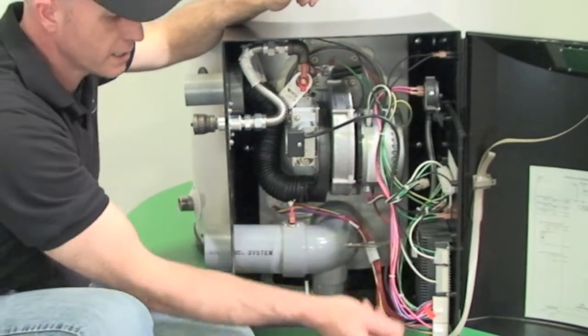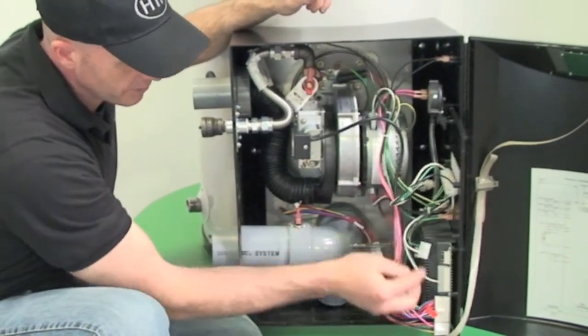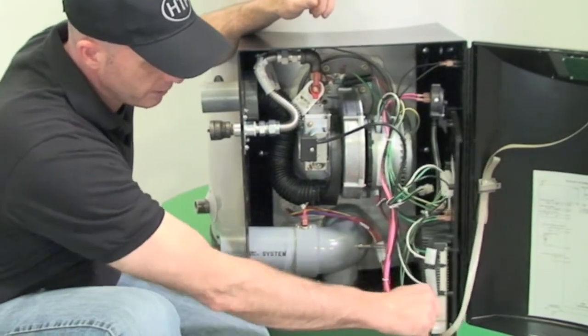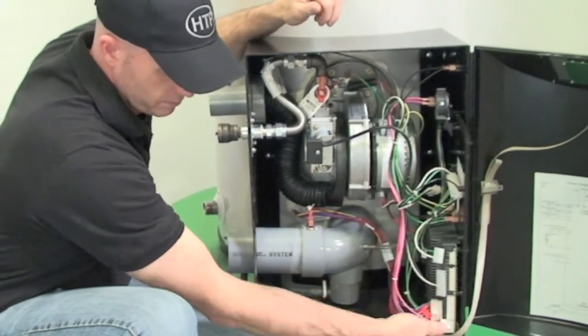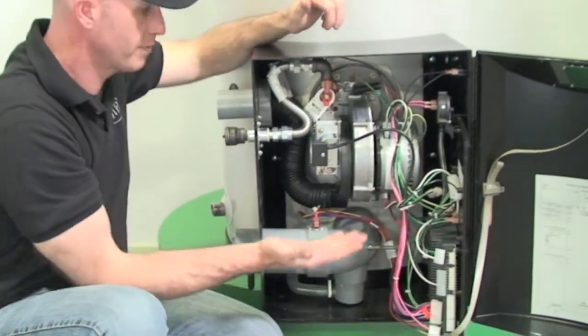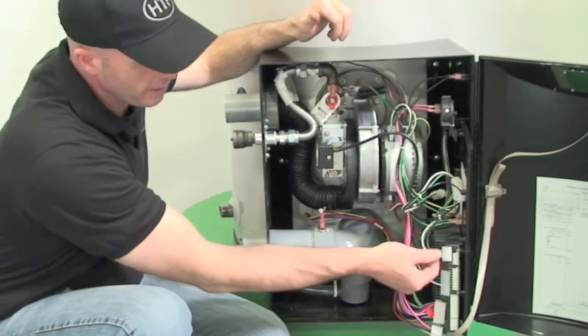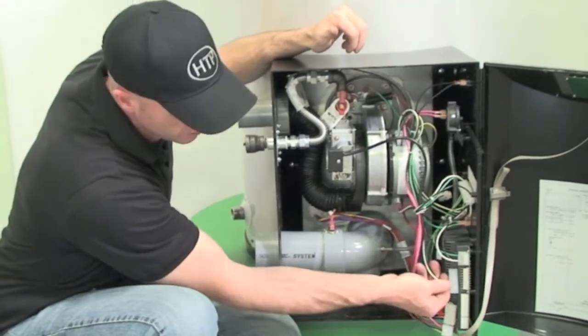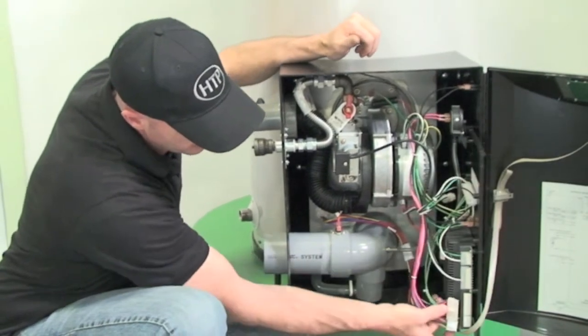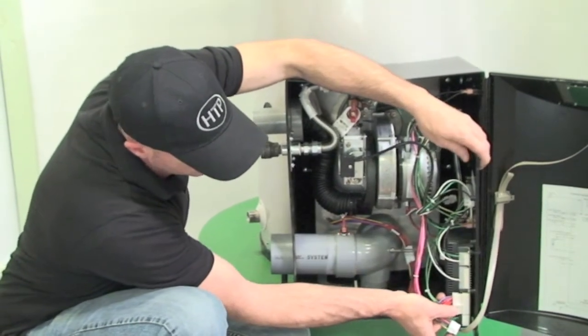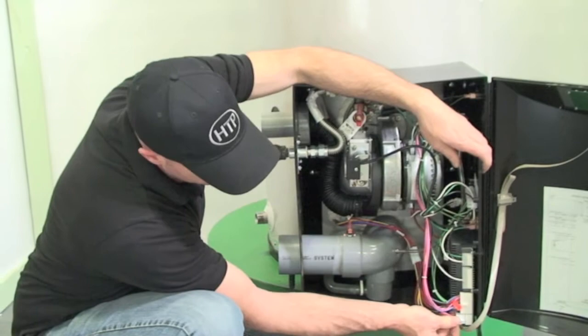All the wiring is done through what we call Molex connectors, and they are simply clipped on and unclipped. The control board can be removed and then replaced by simply reinstalling the screws. The wires are back in their spot, and these wires are keyed, so it's almost impossible to get these wrong.